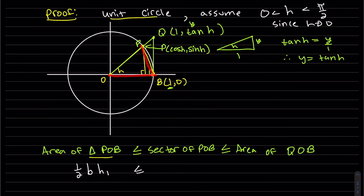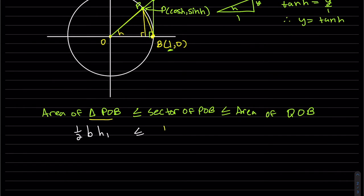So the formulas are half base times my height one, P, O, B. But I did draw its height. Remember the area of a sector? Half θr². That comes up a couple times in this class in calc two is half base times height two.